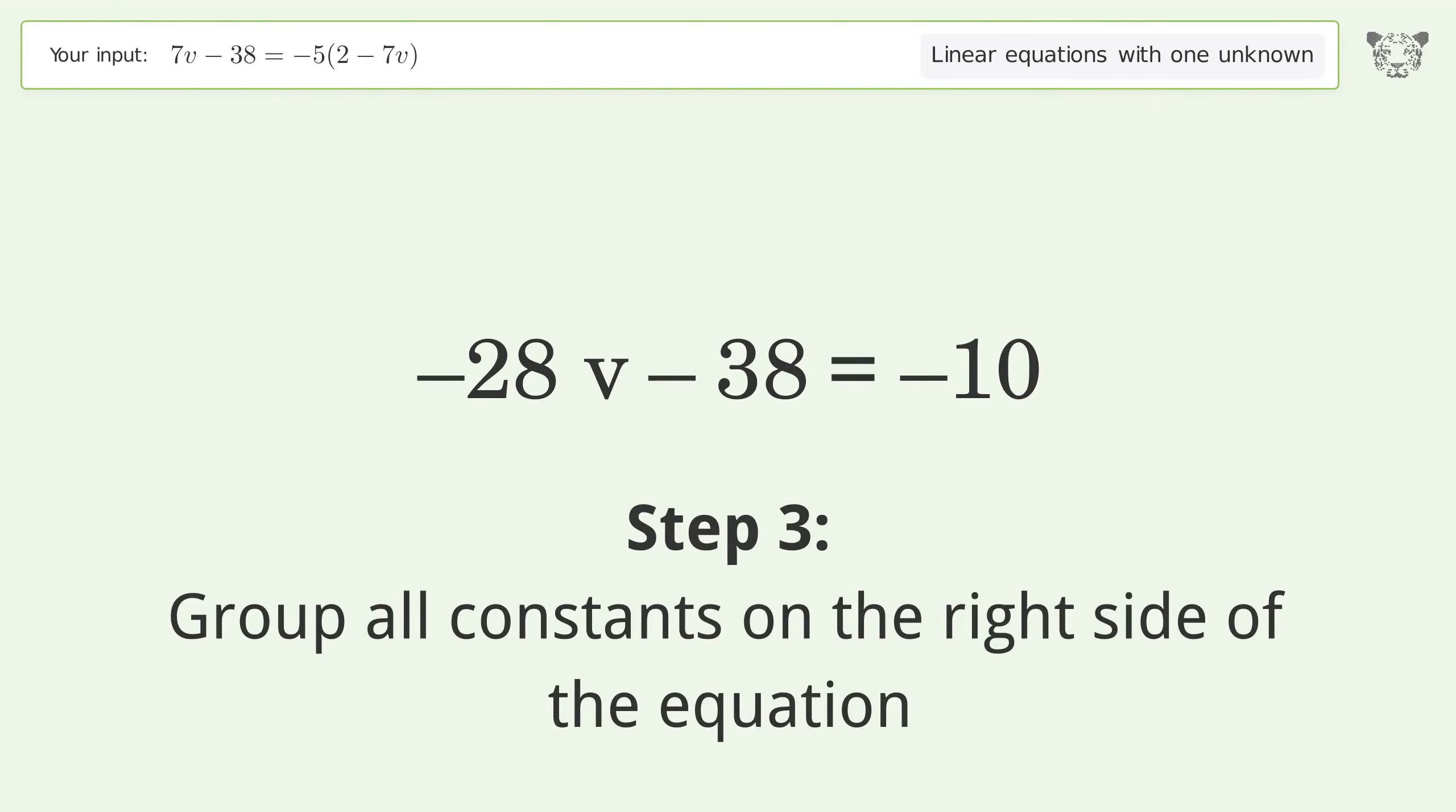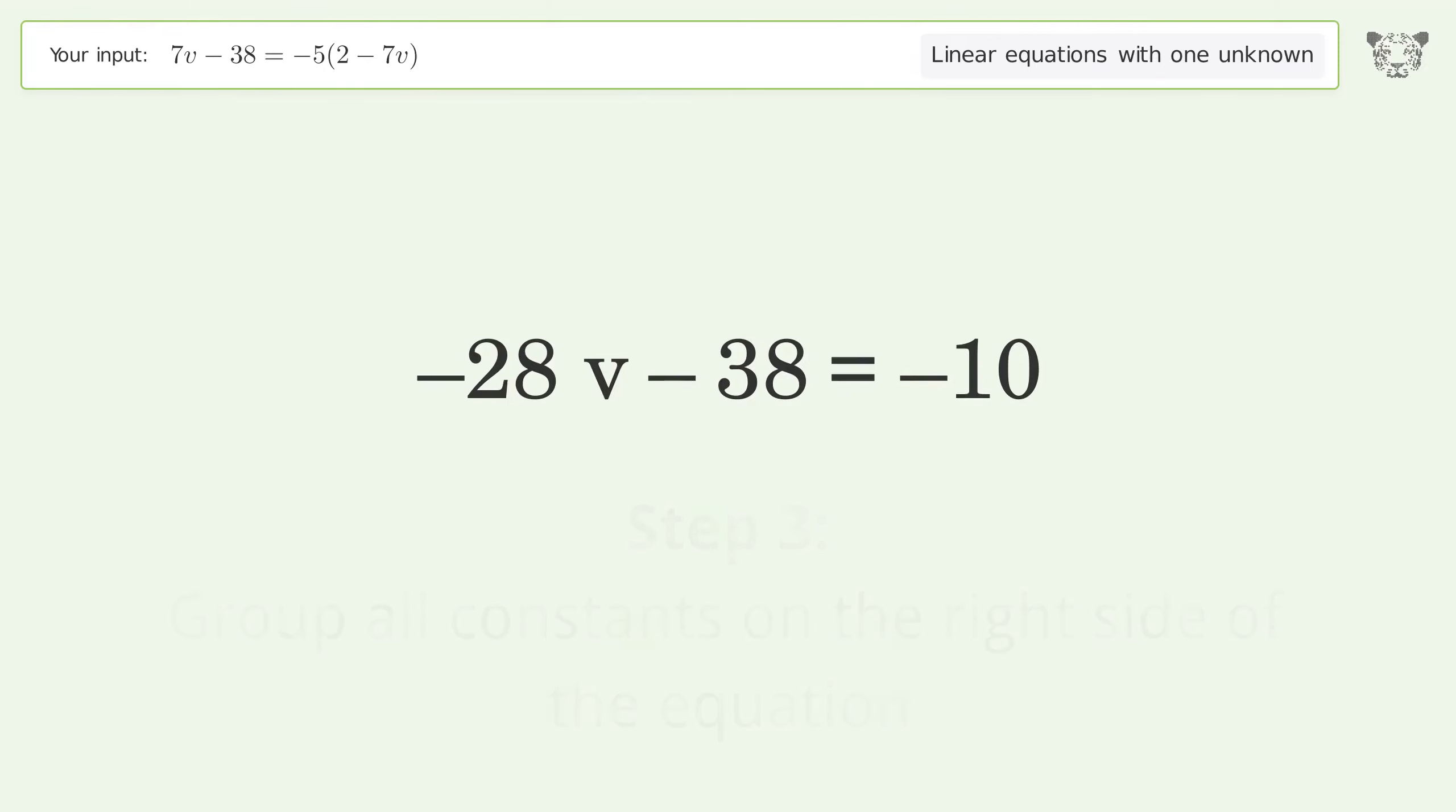Group all constants on the right side of the equation. Add 38 to both sides. Simplify the arithmetic.